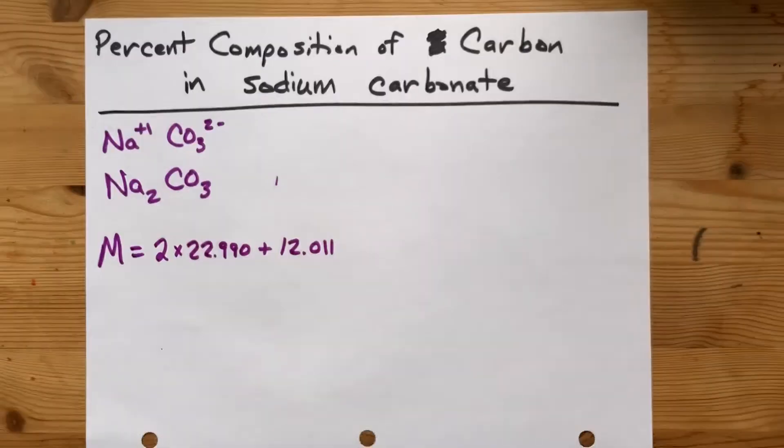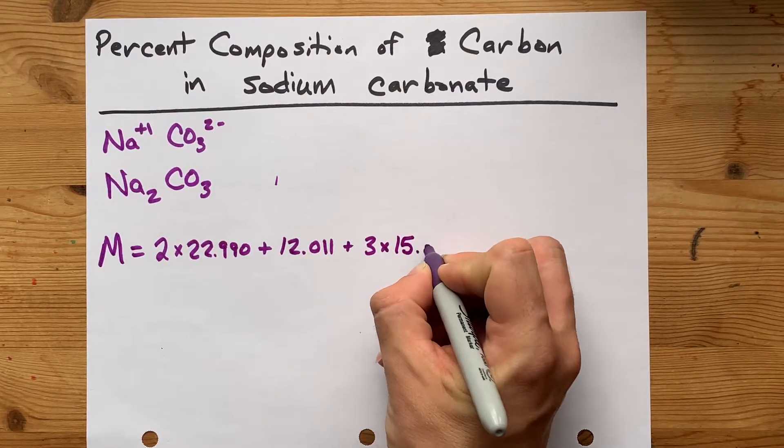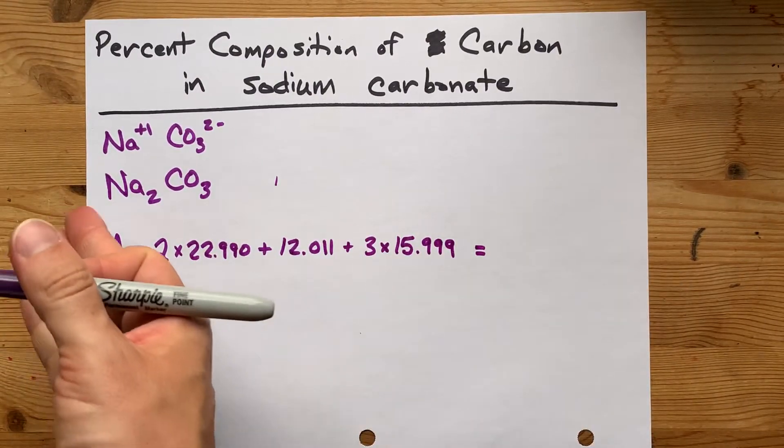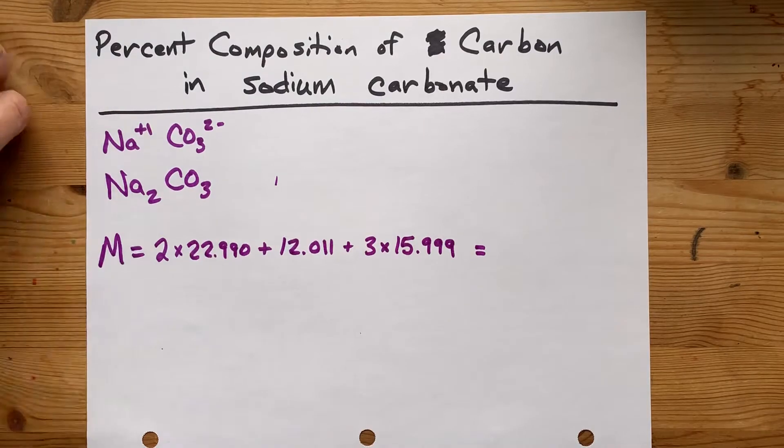So, we have to add in 15 of the, or sorry, three of these 15.999s. This is the molecular mass of a sodium carbonate unit. It's going to feel pretty big. Let's go see.